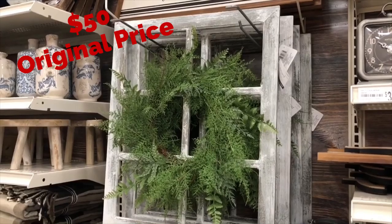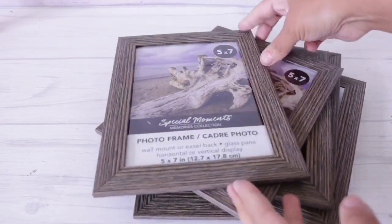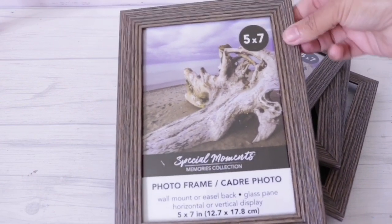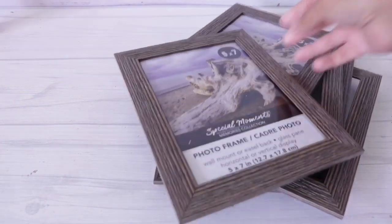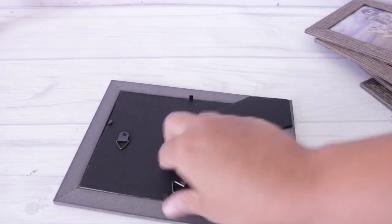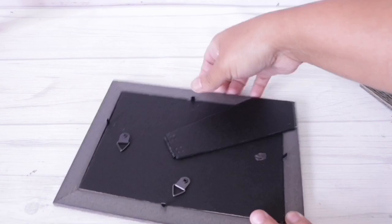Let's get started. My first dupe is this window panel, originally $50, it's since gone on clearance but still really pricey. I'm going to get six of these five by seven frames from Dollar Tree. They also have them in much bigger sizes if you want to make a bigger window panel.